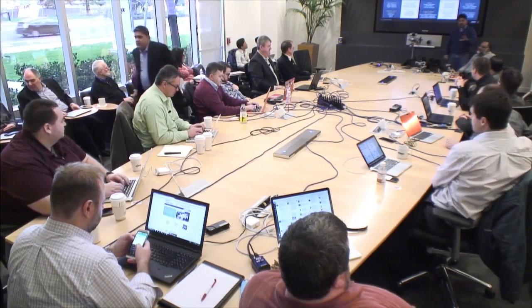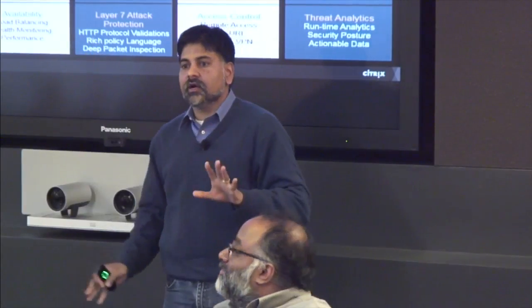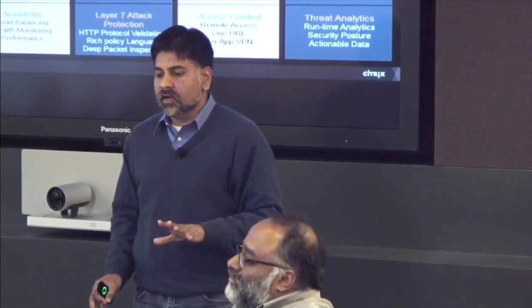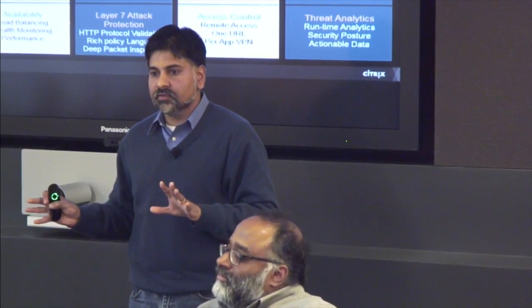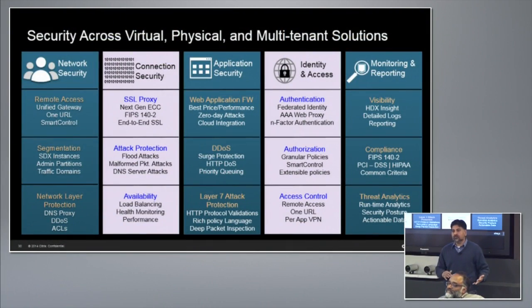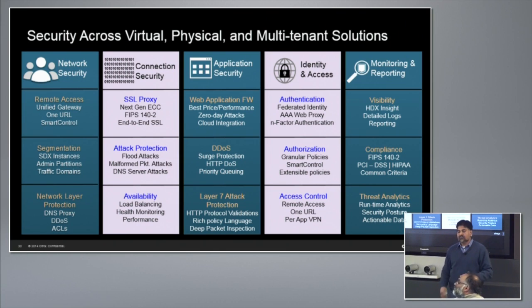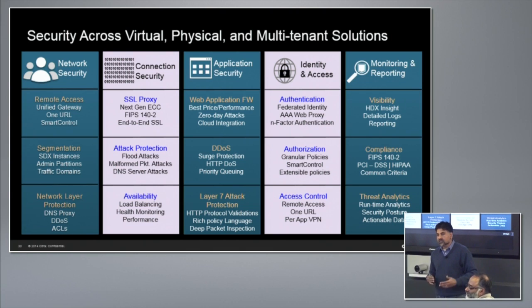NetScaler can be thought of as a layer 2 through 7 security device. At the network security layer we cover segmentation, multiple route domains in a single device, multiple instances in a single hardware device, and DDoS protection. At layer 4 and 5 we have TCP proxy capabilities to defend against attacks — for example, connections opened but no data sent, or TCP fragment reassembly exhaustion attacks. We also have SSL defenses at those layers.